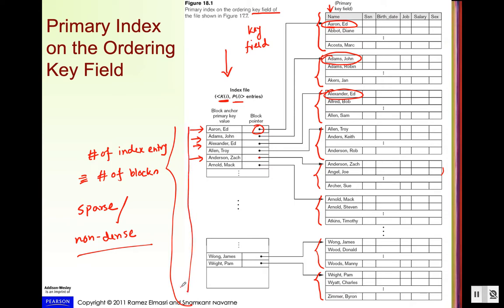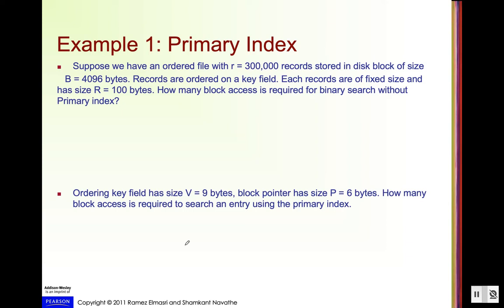As we know, for a sparse index — especially for a primary index — the number of index entries is much less than the number of records in the file. So when we look for a record, we initially look for it in the index entries, which is much more efficient. Let's see an example: we'll compare the number of block accesses without indexing versus with indexing.